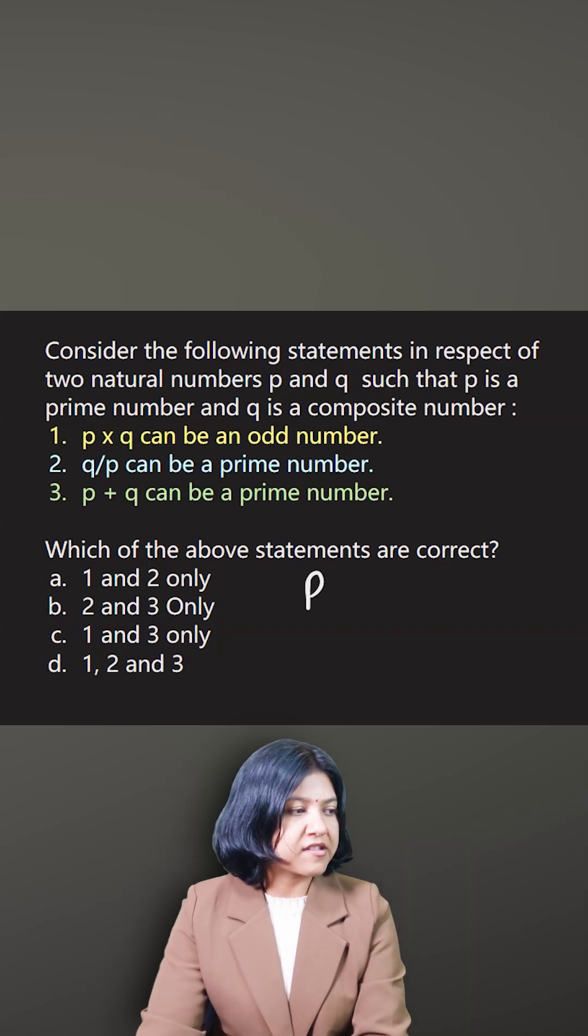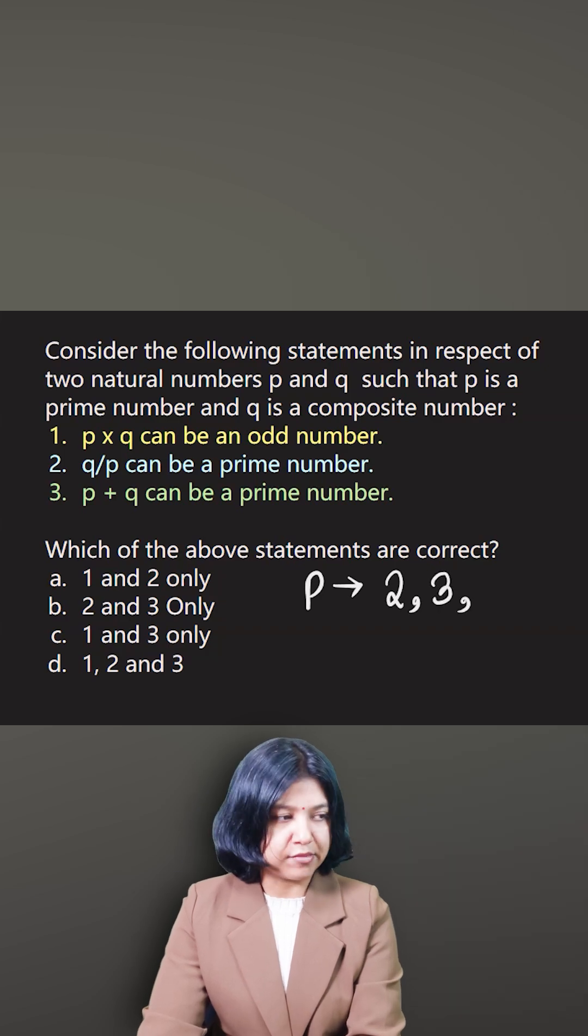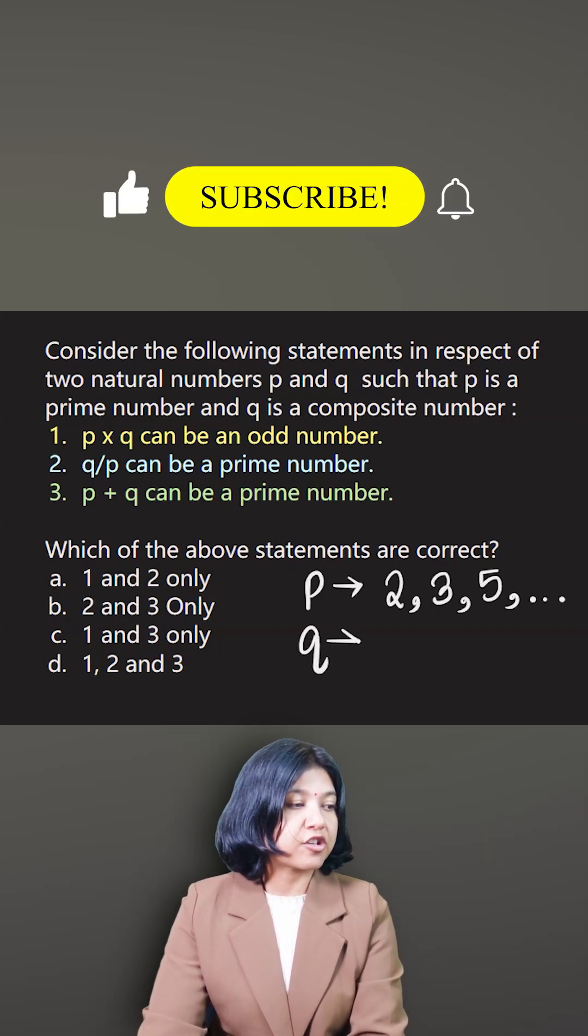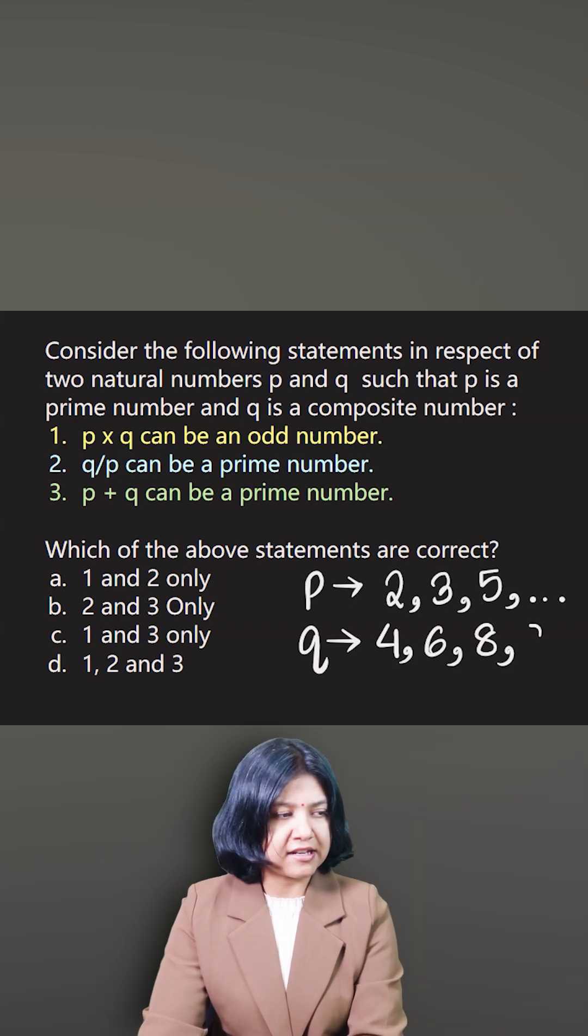If P is a prime number, then prime numbers begin at 2, which is the only even prime number. The rest are all odd numbers. Similarly, if you look at composite numbers, the first composite number is 4, followed by 6, then 8, 9, and so on.